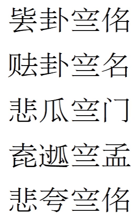Zhuang characters, or Sawndip, are logograms derived from Han characters and used by the Zhuang people of Guangxi and Yunnan, China, to write the Zhuang languages for more than 1,000 years. The script is not only used by the Zhuang but also by the closely related Buye in Guizhou, China, and Te in Vietnam and Nung in Yunnan, China and Vietnam.